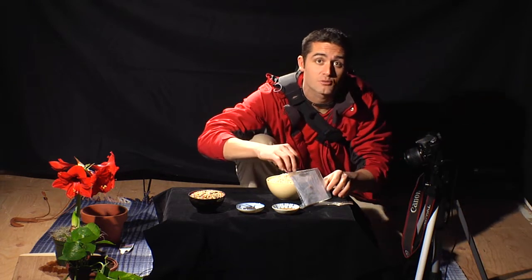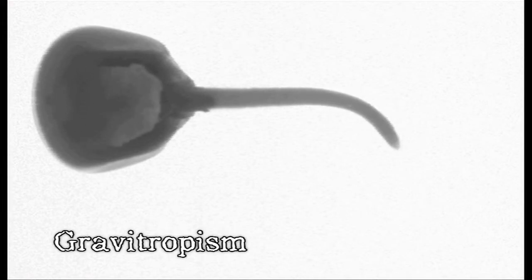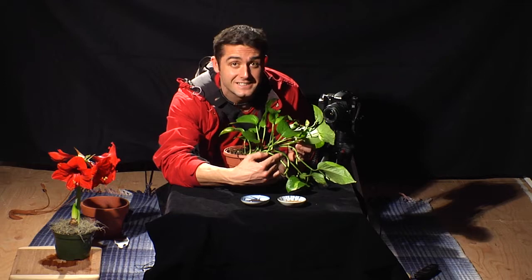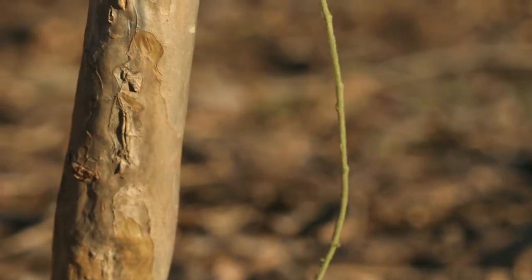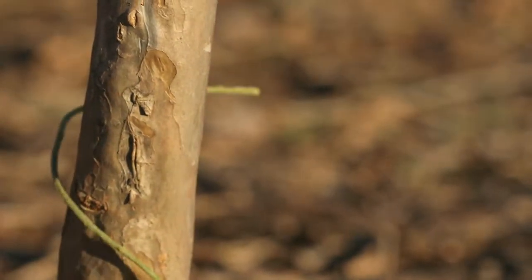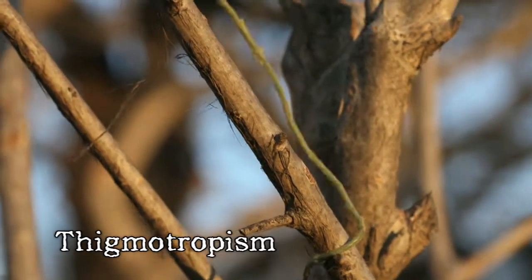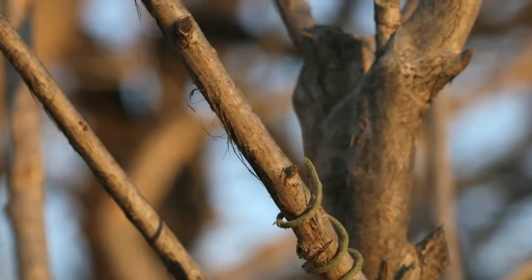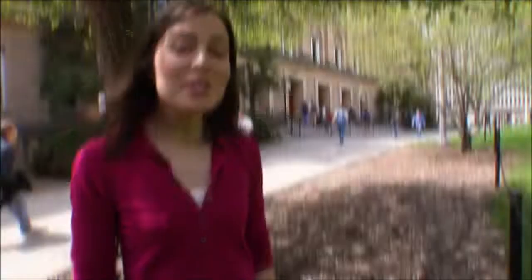Here's another tropism: watch what happens to the roots of this seed when I turn it on its side. This is a tropism called gravitropism — the roots turn downward towards the pull of gravity. Other plants have the ability to cling to things; they have tendrils that wrap around objects. This is another tropism called thigmotropism. If a growing vine touches a twig, the plant responds to this touch and wraps its tendrils around the twig. While it looks as though plants might be thinking, they don't actually know which way to grow.